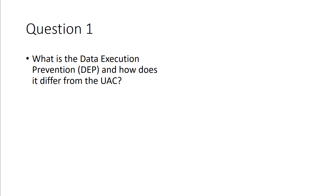What is data execution prevention and how does it differ from the UAC? UAC is user access control — that's going to be more about you being able to access or save items to certain locations. UAC specifically deals with when you're logged in as an administrator, what type of session token do you get. You get a user token if you don't need administrative privileges. When you need administrative privileges, you get a UAC prompt, and that is basically promoting your user token to an admin token.